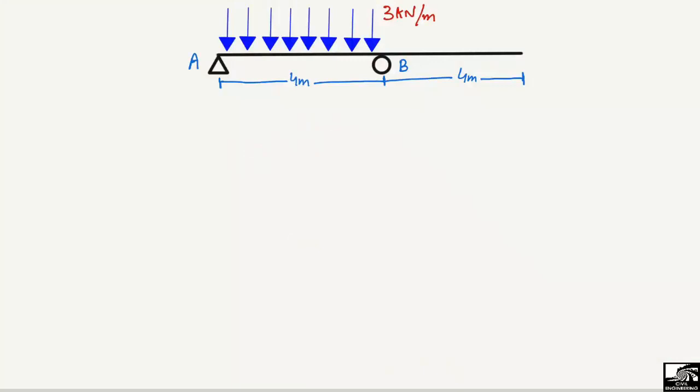Welcome back to the Seven Engineering YouTube channel. Today we are going to analyze an overhanging beam with two supports and a uniformly distributed load of 3 kilonewton per meter acting on it. The simply supported part is 4 meters and the overhanging part is also 4 meters. The supports are at A and B. We will use equilibrium equations to find the support reactions, then draw the shear force and bending moment diagram.